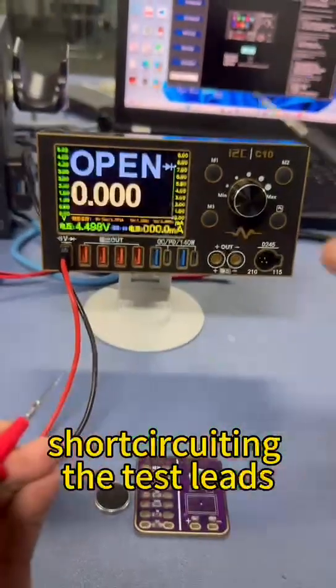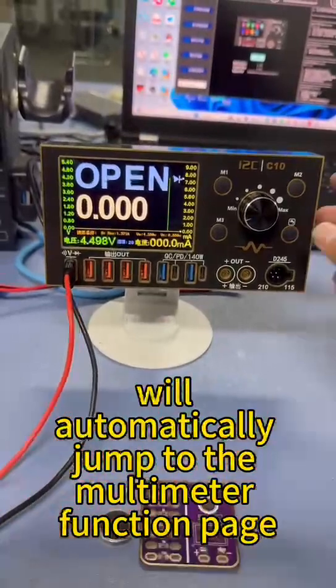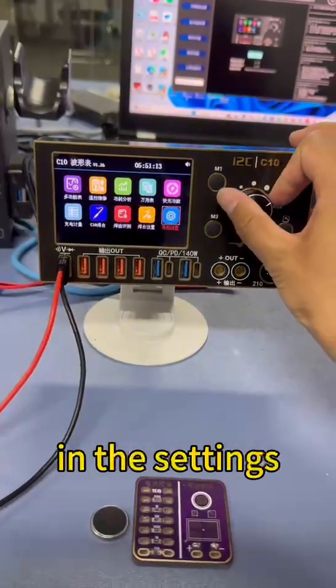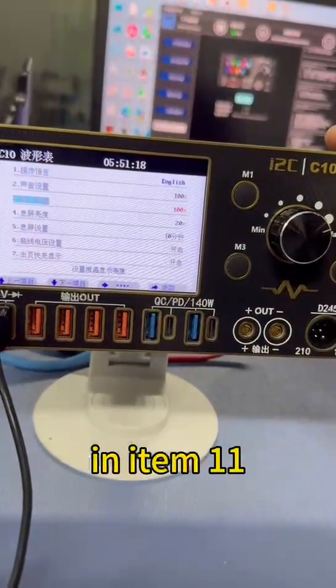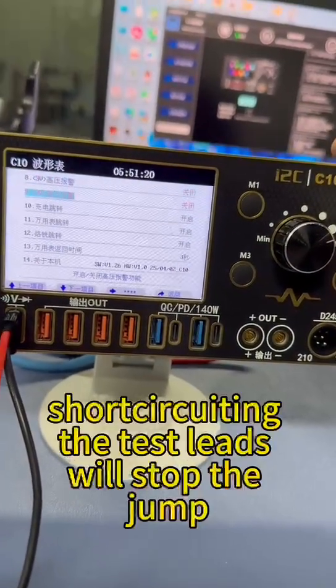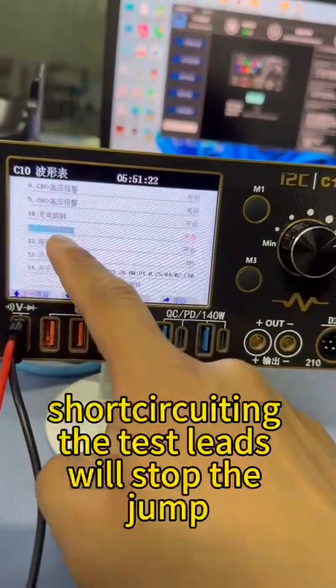Short circuiting the test leads will automatically jump to the multimeter function page. In the settings, after turning off the multimeter jump function in item 11, short circuiting the test leads will stop the jump.